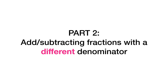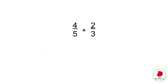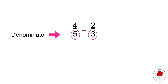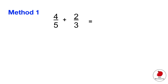Sometimes they'll ask you to add or subtract fractions with a different denominator. For example, you can see that these fractions have two different denominators: 5 and 3. In order to add these fractions, we have to make them have the same denominator — we have to find a common denominator. I'm going to show you two methods to do this. Method one: look at the denominators and think, what number divides by both of these numbers?